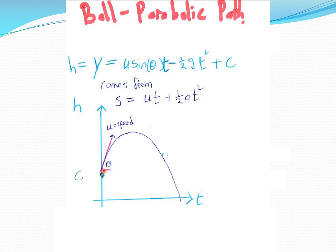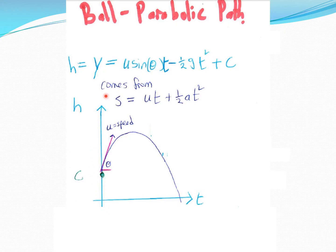The ball follows a parabolic path. Using the displacement formula s = ut + ½at², the initial velocity u is projected at an angle, so we need the vertical component. For the height (vertical displacement), we use the y-component of the initial velocity. From trigonometry, the y-component is u × sin θ, and the x-component is u × cos θ.